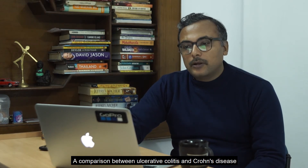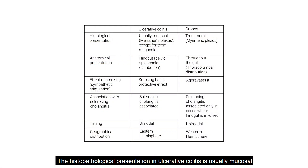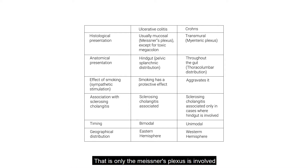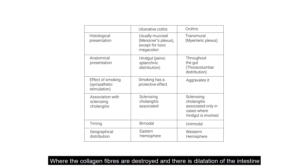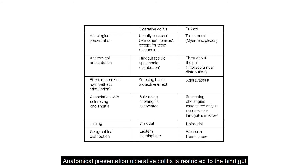A comparison between ulcerative colitis and Crohn's disease: the histopathological presentation in ulcerative colitis is usually mucosal — only the submucosal plexus is involved — except for toxic megacolon, where the collagen fibers are destroyed and there is dilatation of the intestine. Crohn's disease is transmural, so the myenteric plexus is involved.